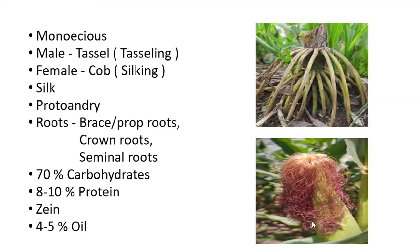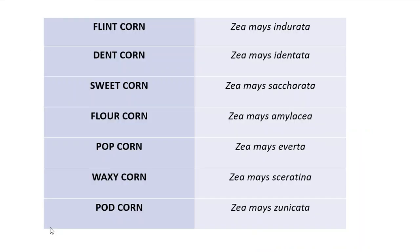Regarding the content present in maize: 70% carbohydrates, 8 to 10% protein — the maize protein is called zein — and 4 to 5% oil. Maize types are classified based on the nature of the endosperm.